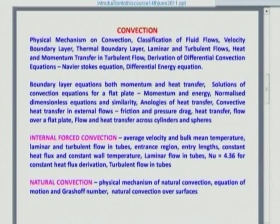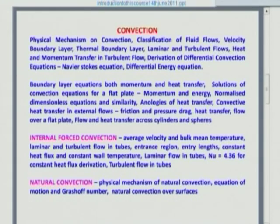Later on we will be covering internal forced convection, where we will introduce the concept of average and bulk mean temperature, followed by laminar flow and turbulent flow. Closed-form solutions are possible only for laminar flow — not for turbulent flow. For turbulent flow it would be essentially a correlation-based approach; these correlations have been generated through experiments. We will be touching upon natural convection in terms of writing the governing equations and getting the non-dimensional number — the Grashof number — through these differential equations.